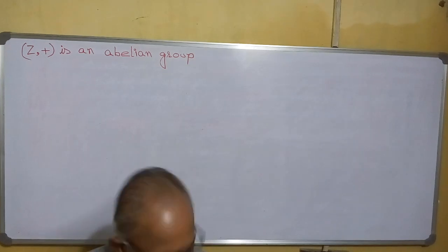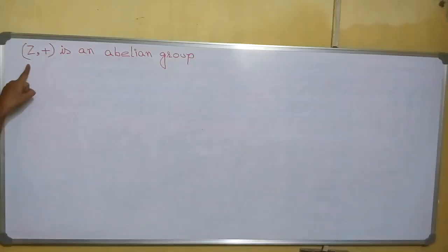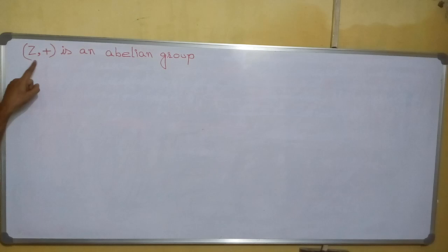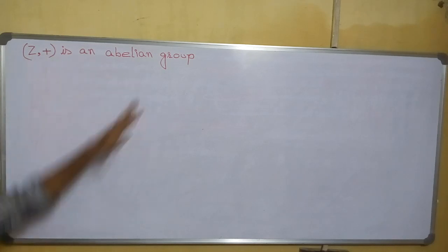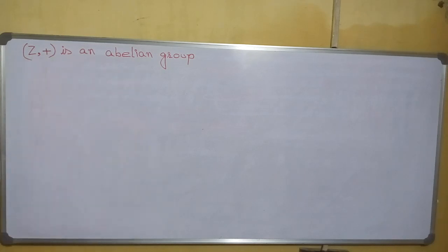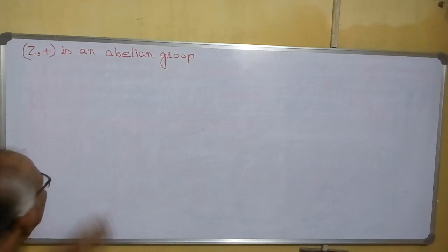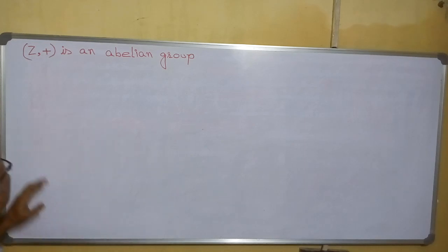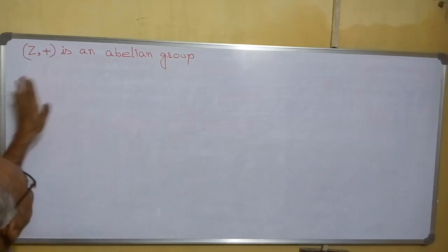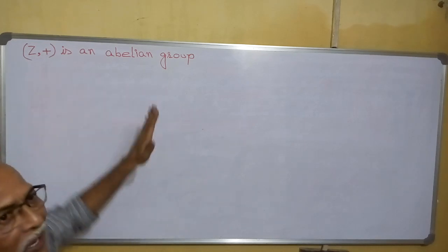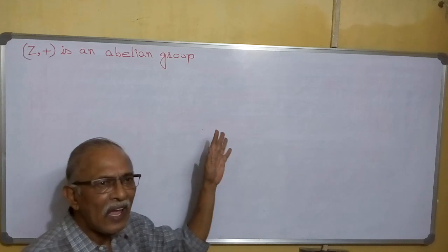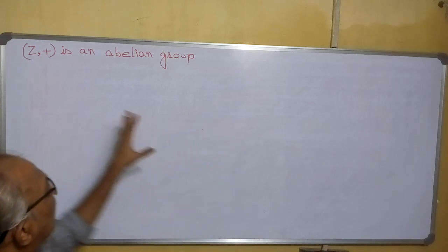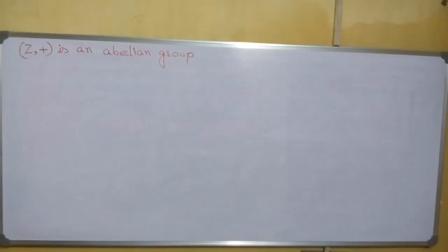Welcome. We have to prove that (ℤ, +) is an Abelian group. Even knowing what an Abelian group is, we have discussed in another class. Let us see here.